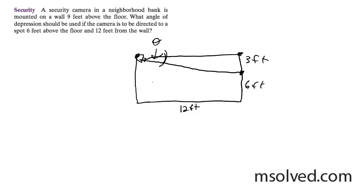I'm going to take the tangent of theta - I'll just call it theta - opposite over adjacent, which is three feet over 12 feet. So theta equals inverse tangent of three divided by 12, which reduces to one-fourth.